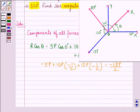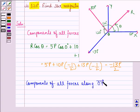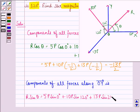Now components of all forces along vector OY: R sin theta is equal to 5p sin 0 degrees plus 10p sin 120 degrees plus 13p sin 240 degrees.